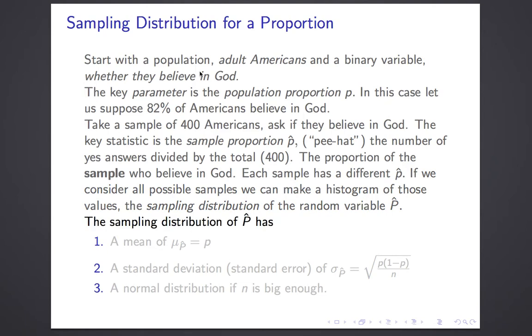The basic point of this lecture is there are three facts under good conditions that you know about the sampling distribution of P-hat. One, its mean is P. Two, its standard deviation, in this case we're going to call it standard error, is square root of P times 1 minus P over N. And finally, it's a normal distribution, if N is big enough.